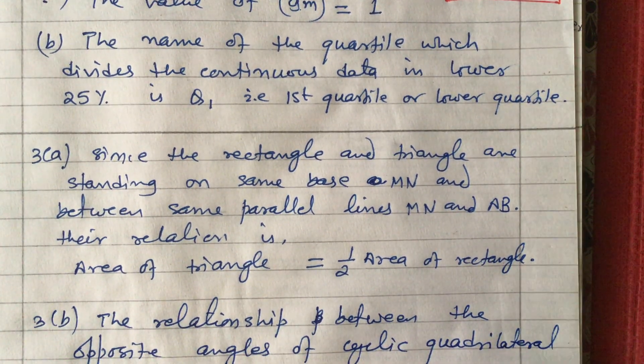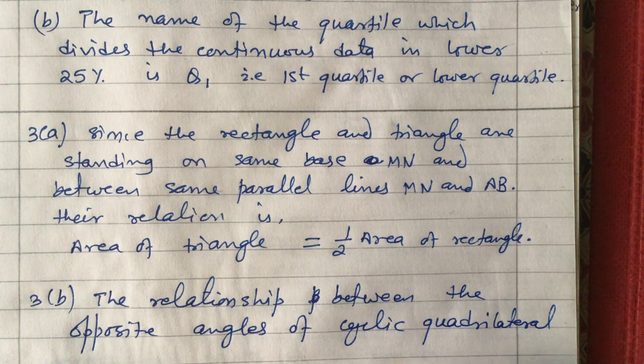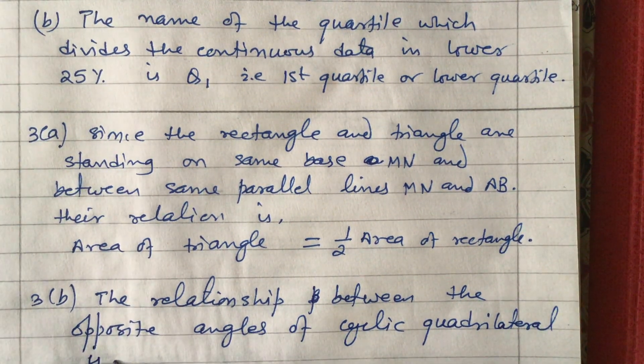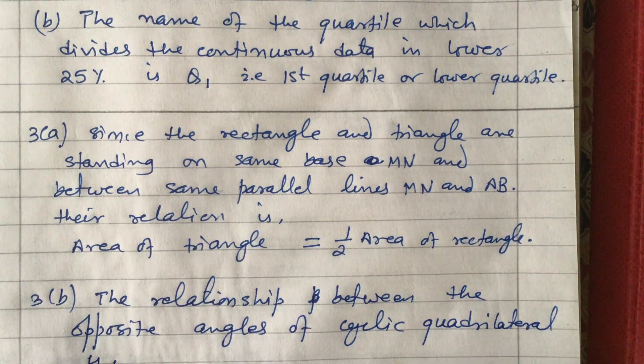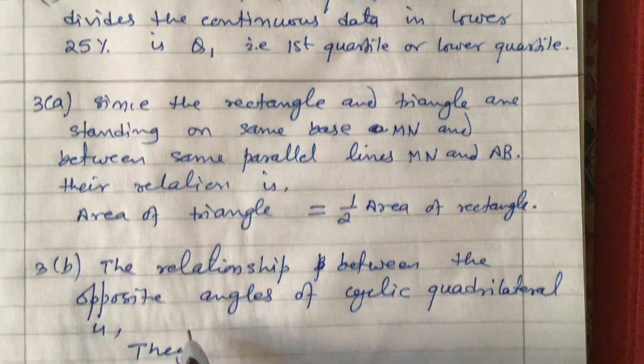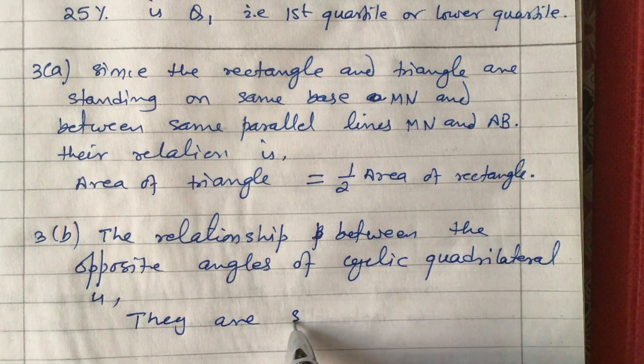So opposite angles of a cyclic quadrilateral - they are supplementary.